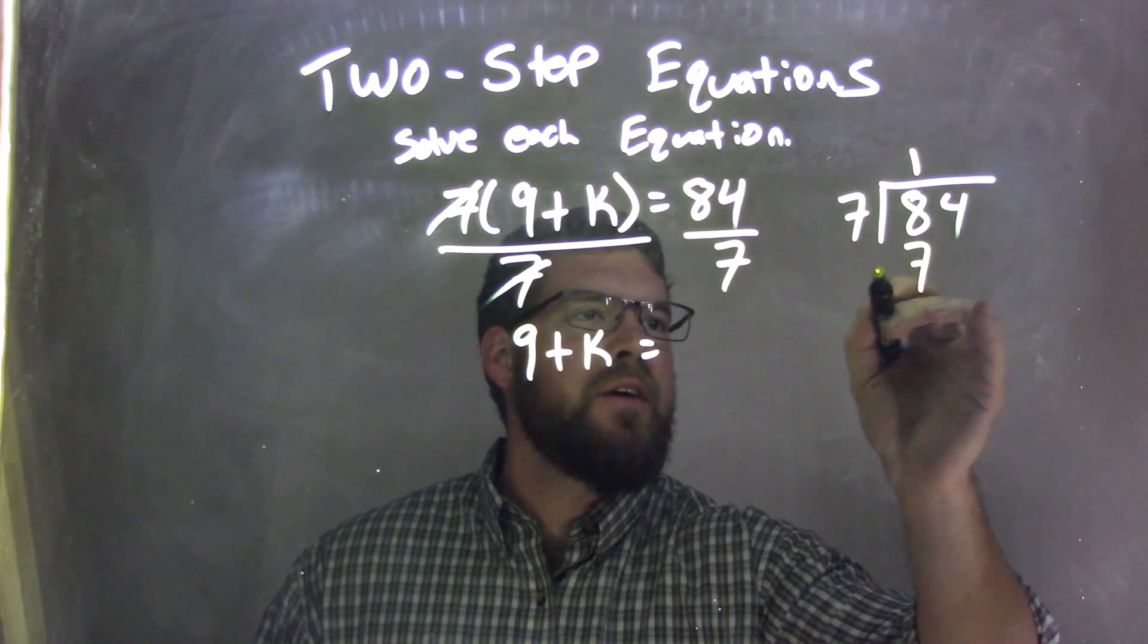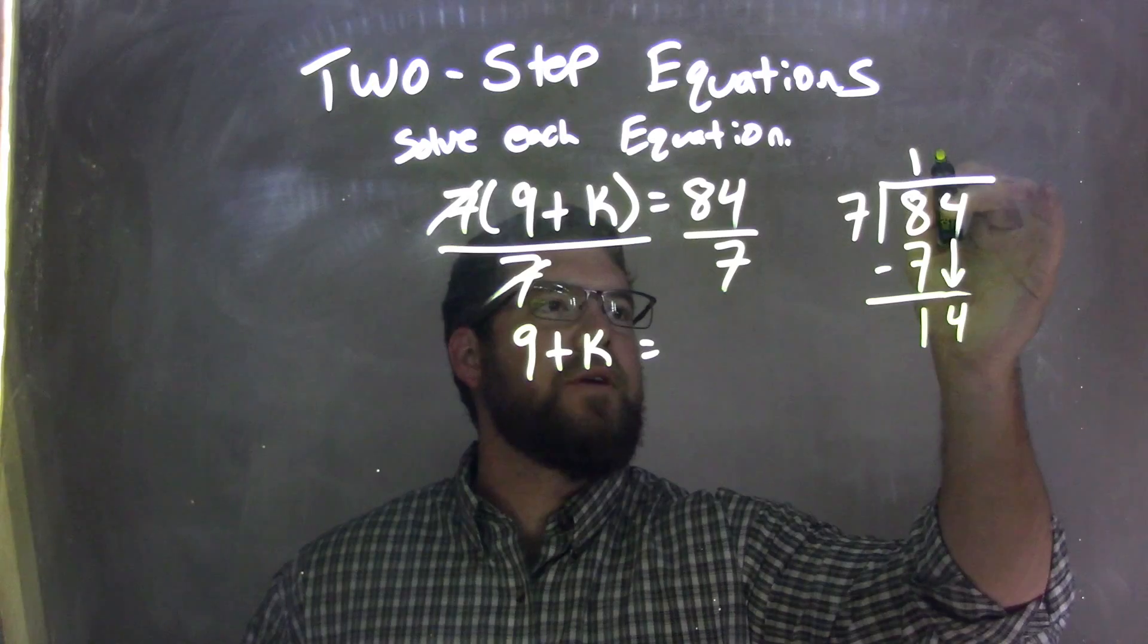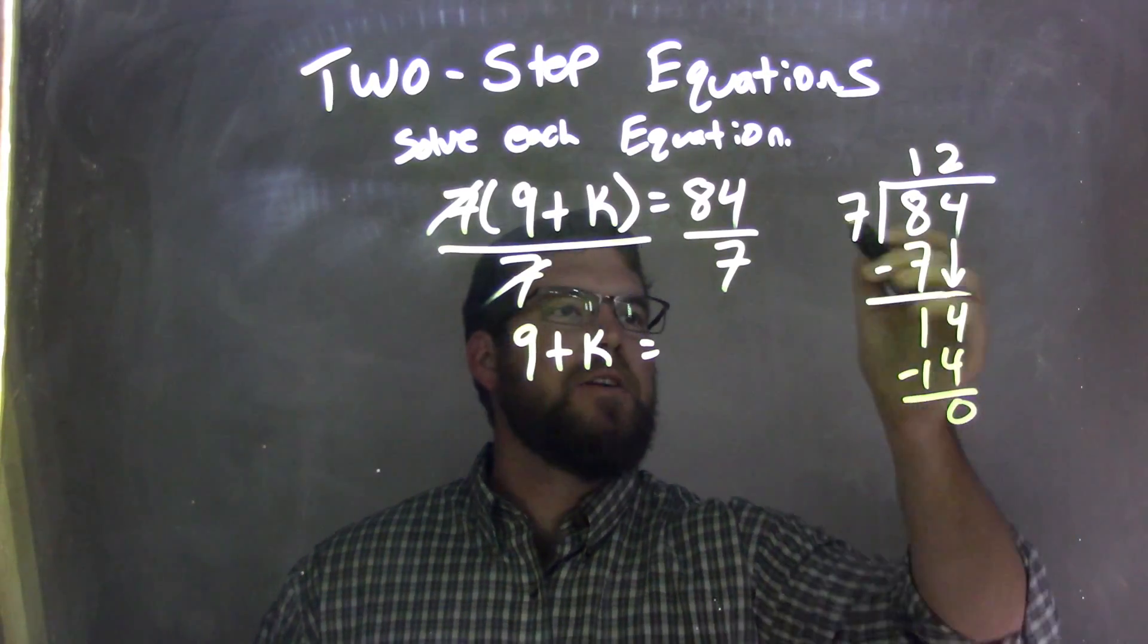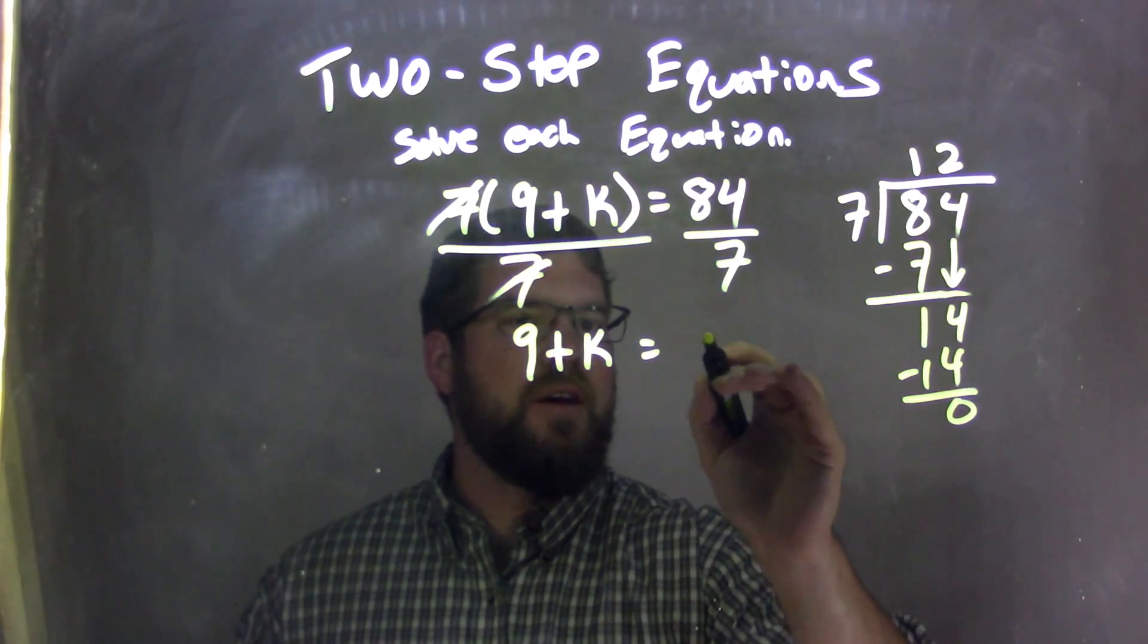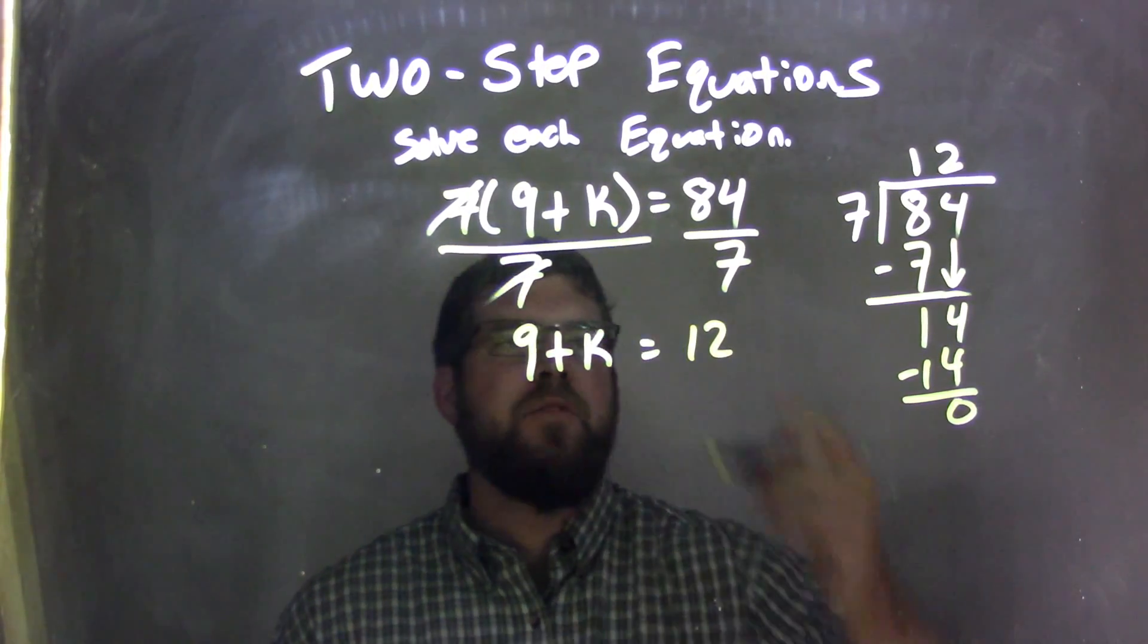1 times 7 is 7. Subtract, I get 1. Bring down the 4, and now you can see it. 7 goes into 14 two times. 2 times 7 is 14. And there we go. 7 goes into 84 12 times. And so 84 divided by 7 being 12...